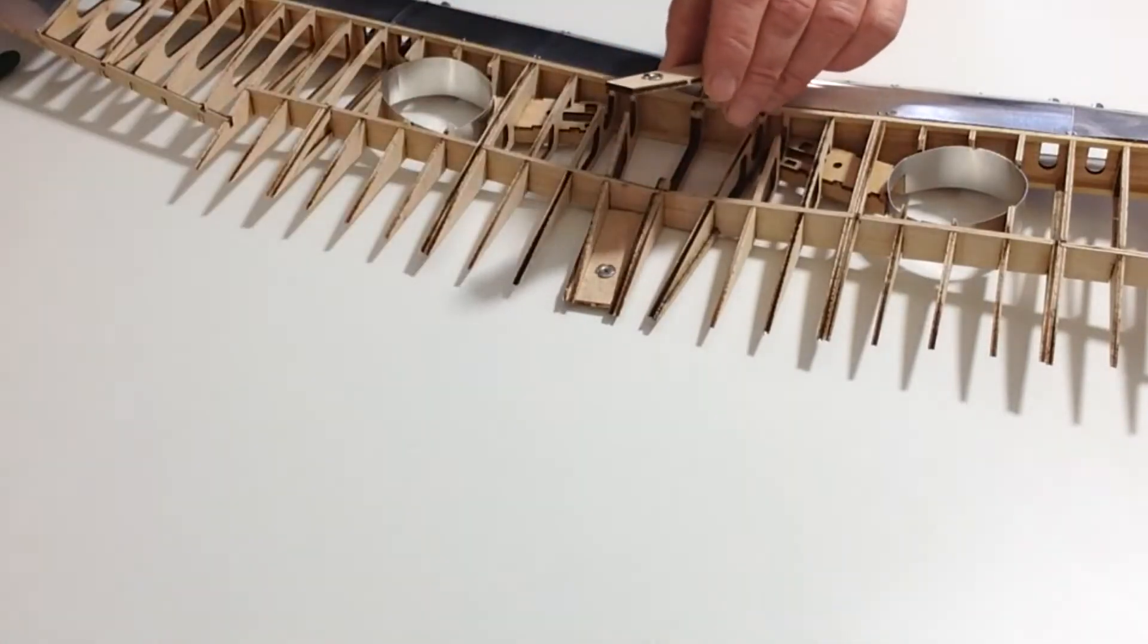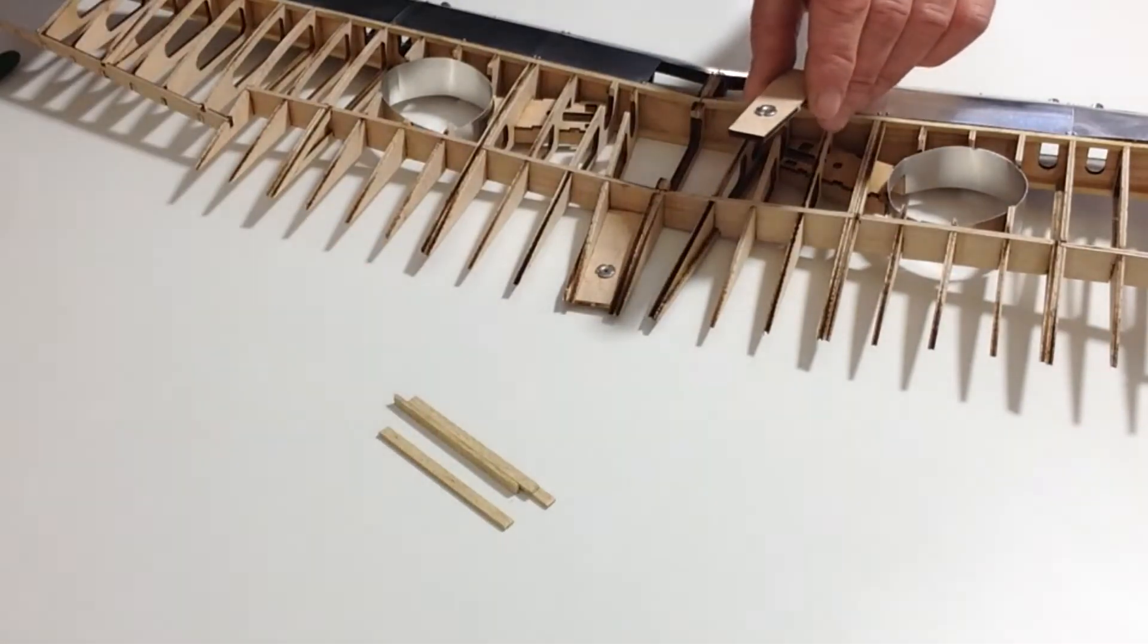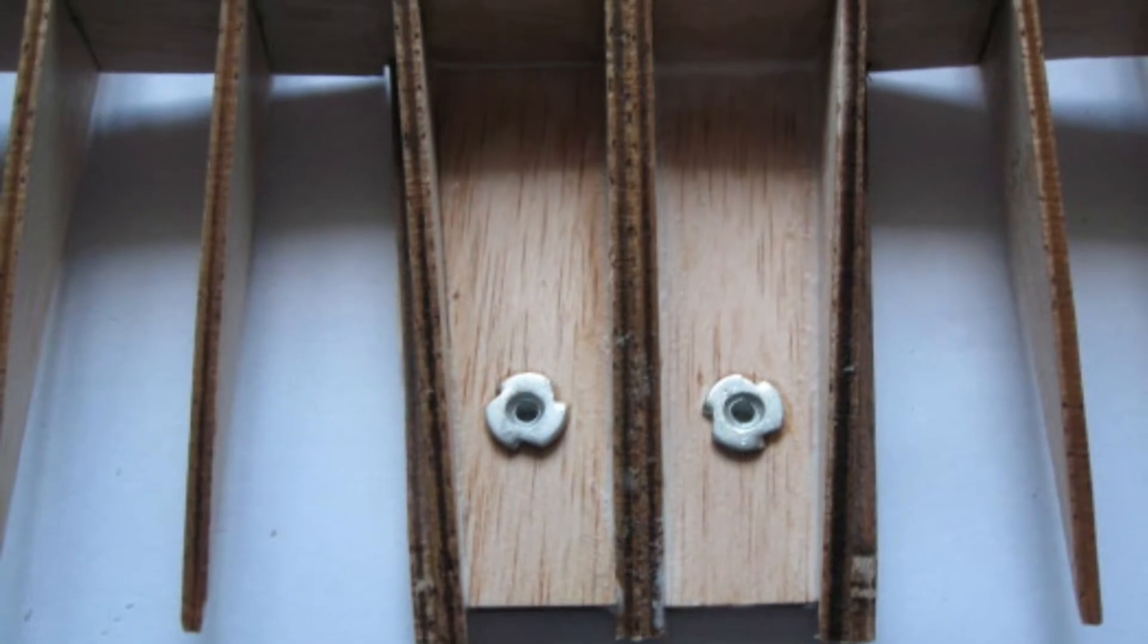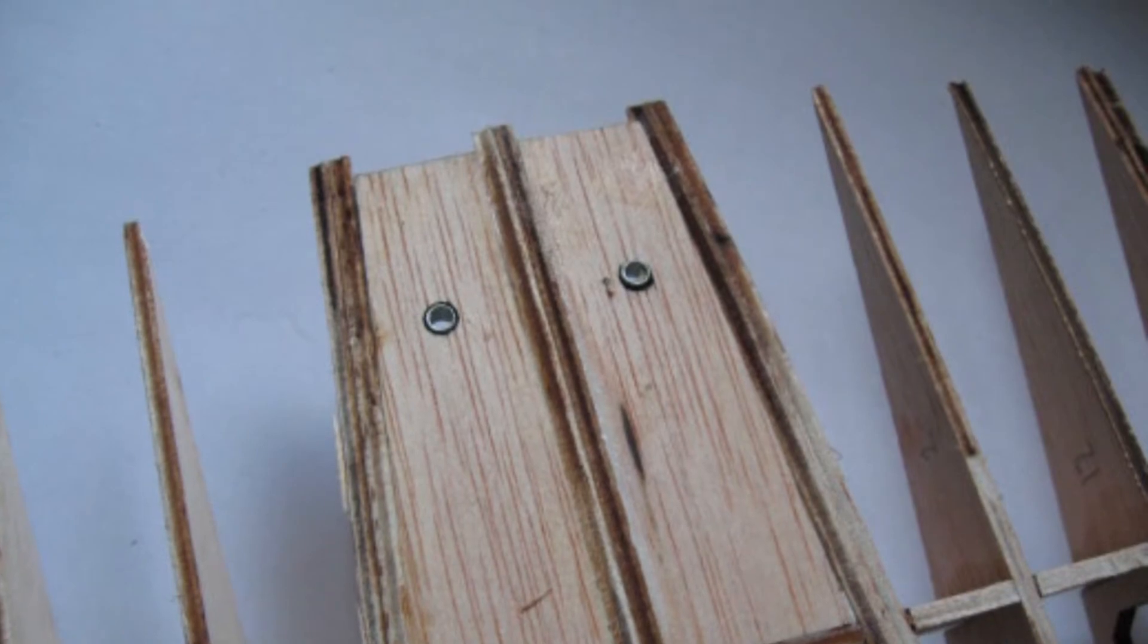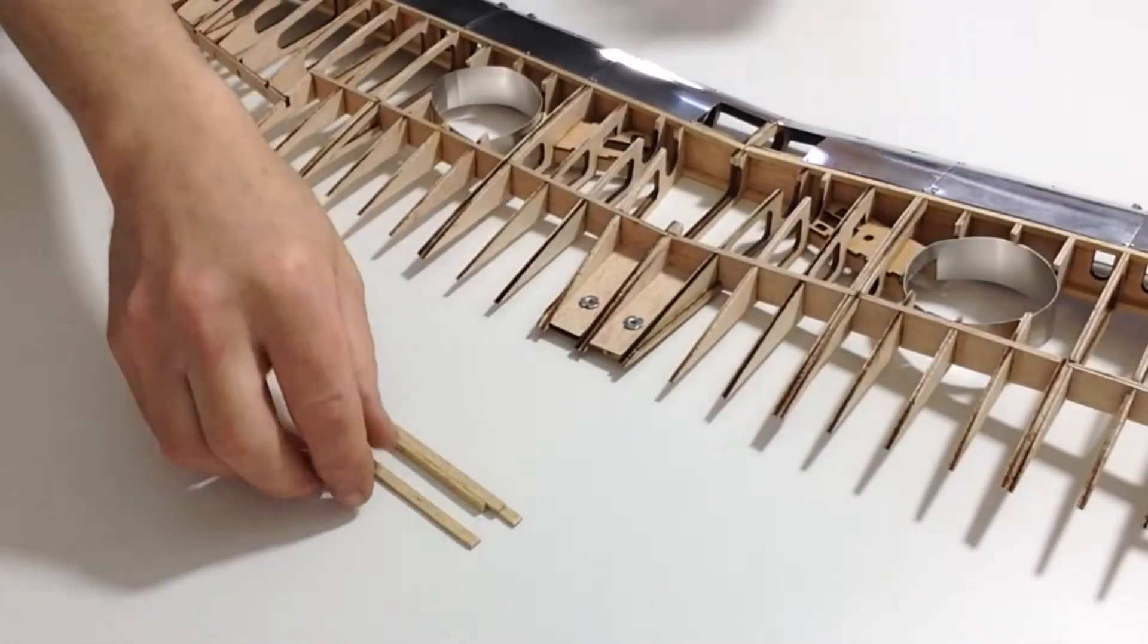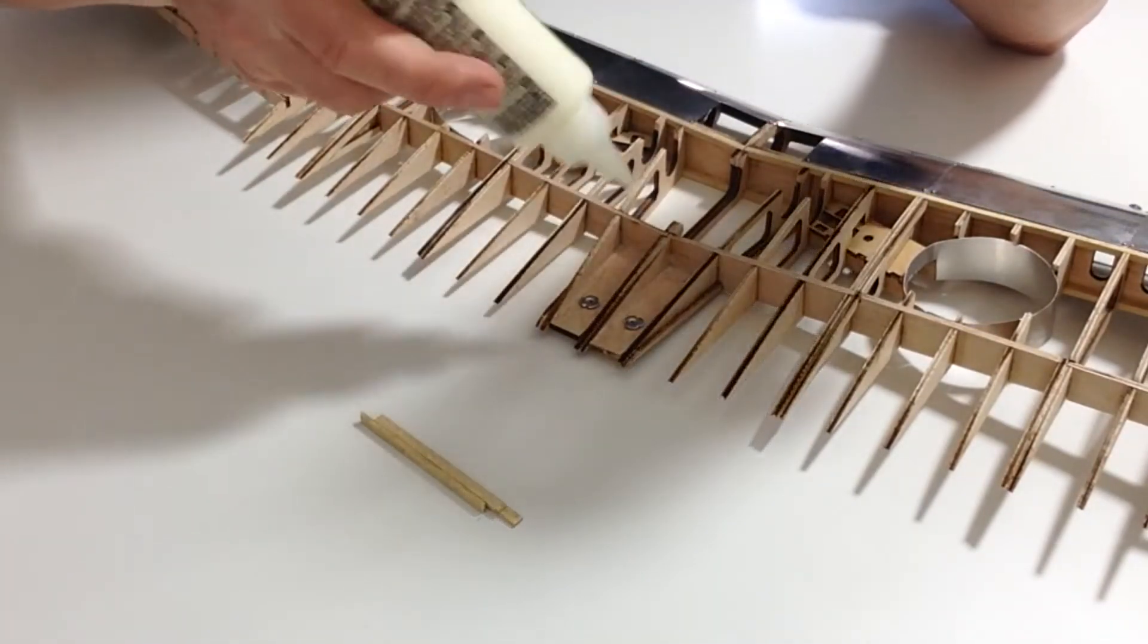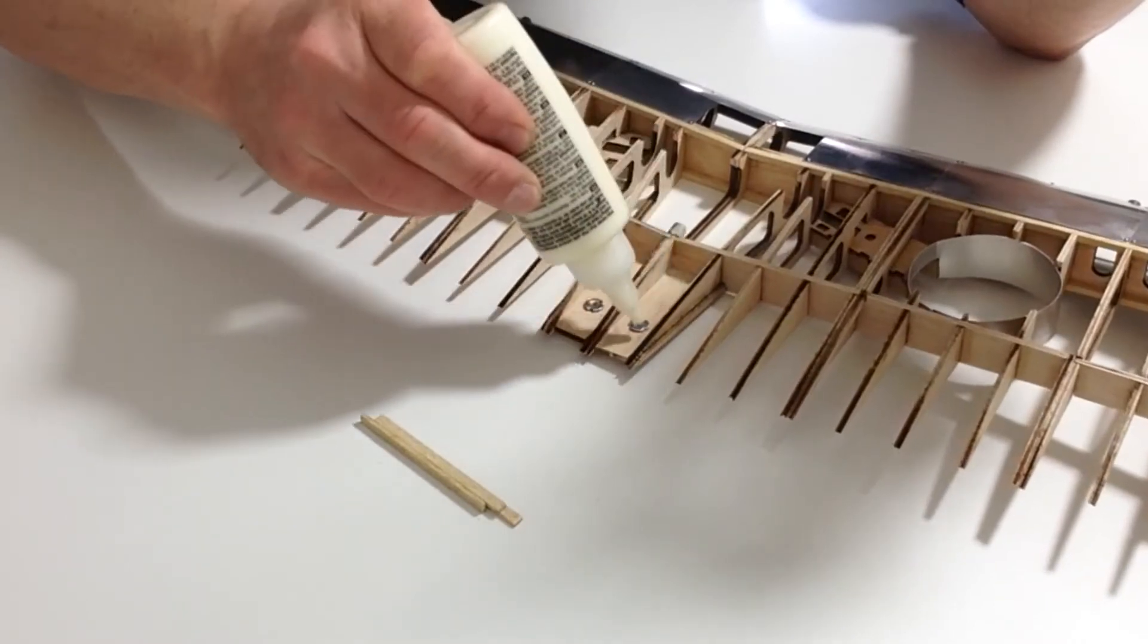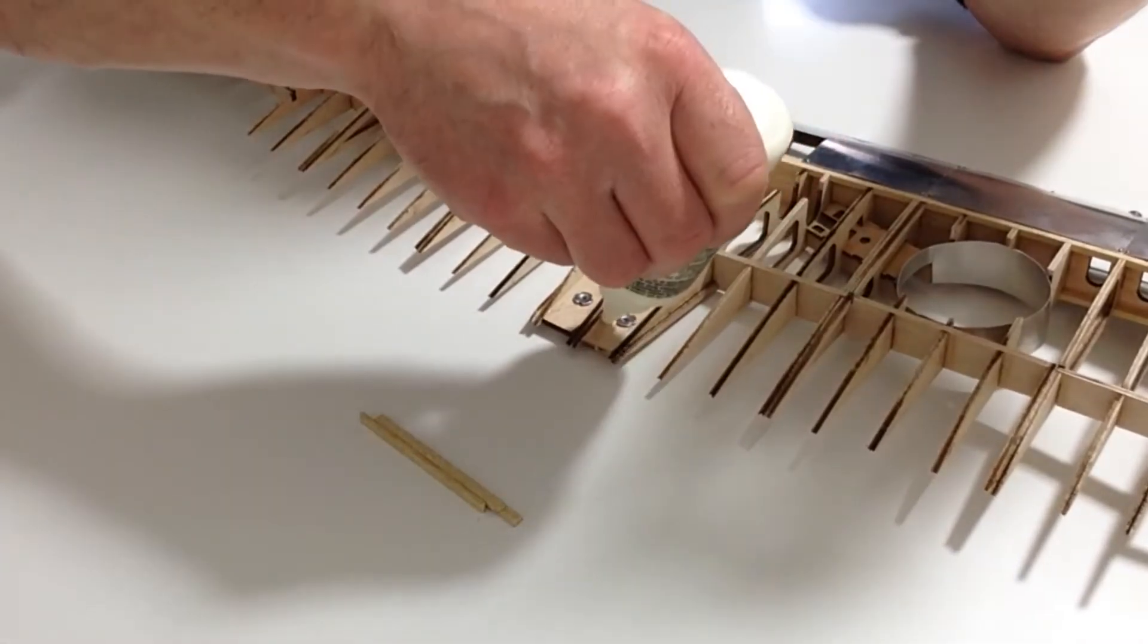Once you've done that, get four strips of the 2x5 millimeter wood and glue those into position. Take your wood strips and apply glue along the inside edges.